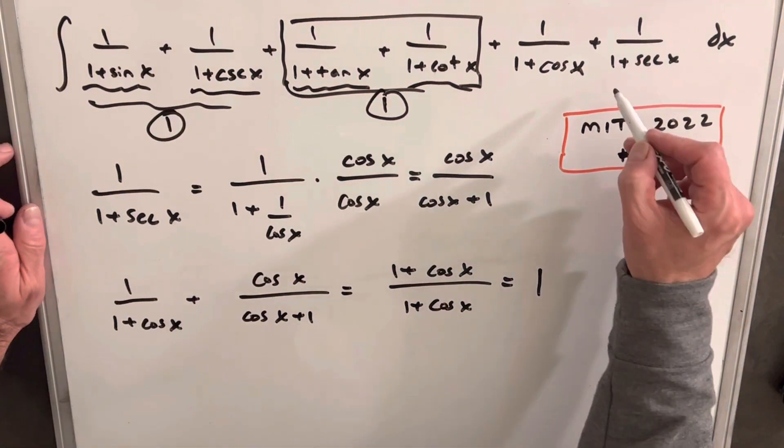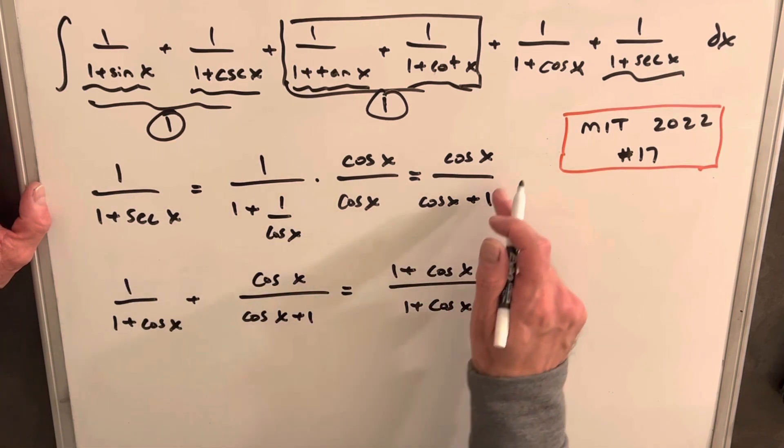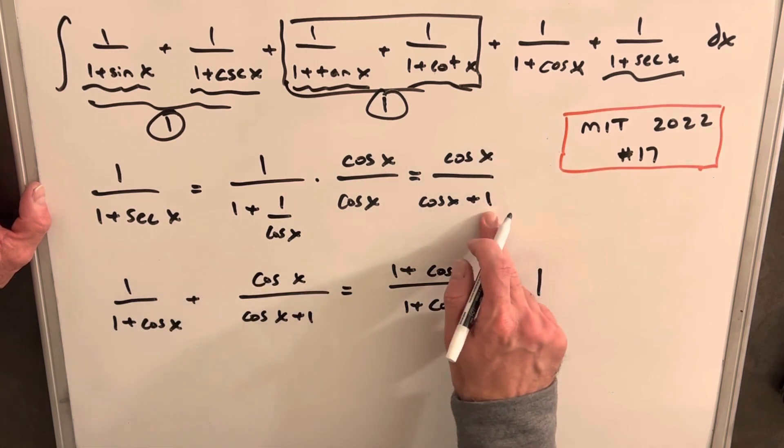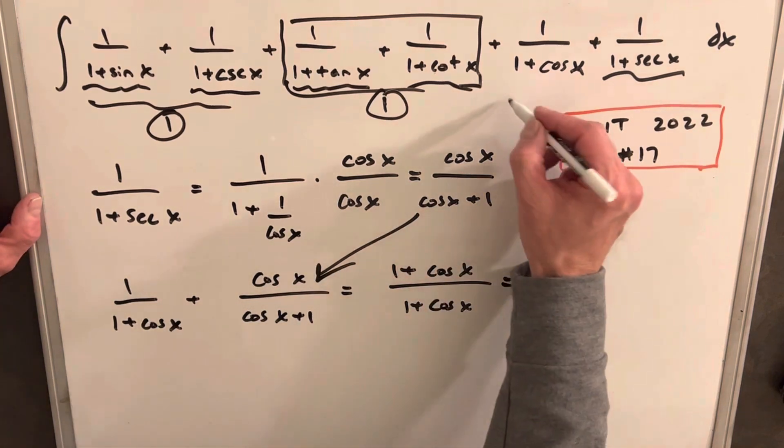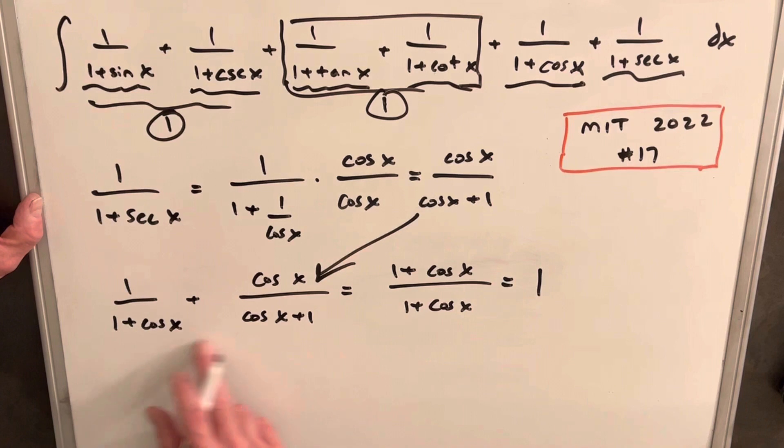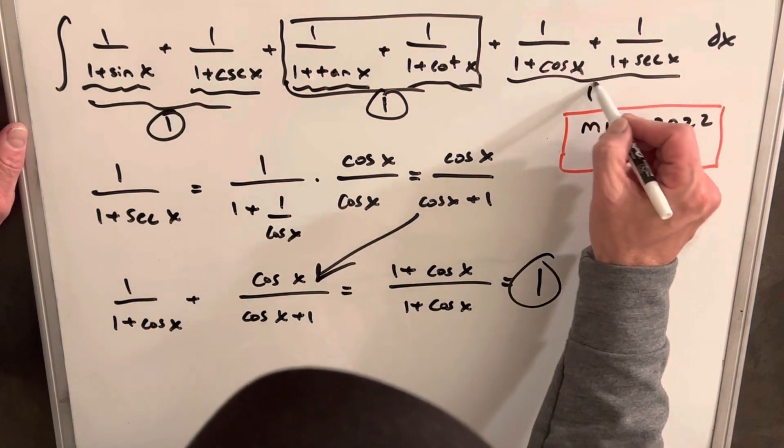Then just repeating the same trick for 1 over 1 plus secant x, we do the same thing. We multiply by cosine over cosine. We get cosine x over cosine x plus 1. We bring this down here. Then we add that with our 1 over 1 plus cosine x term. We add that, we just get 1 again. So then we have a third term that's just 1.